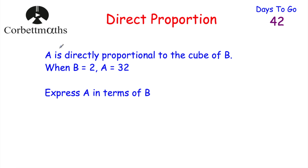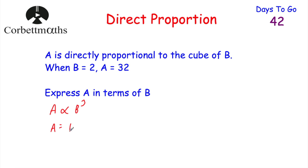Let's have a look at our next question. We've got: A is directly proportional to the cube of B. So this time, instead of the square, we've got the cube of B. We're told that whenever B is equal to 2, A is equal to 32, and we've been asked to express A in terms of B — in other words, get A equals something in terms of B, making A the subject. Press pause and try this question yourself.